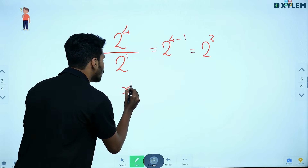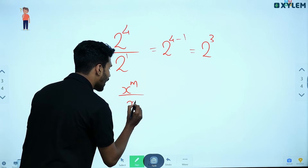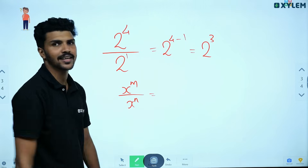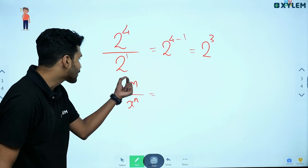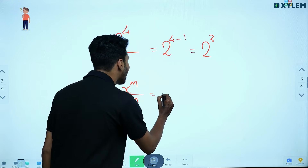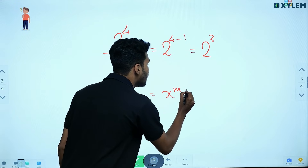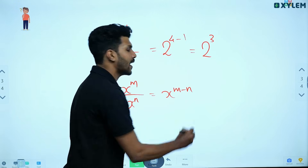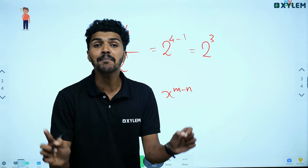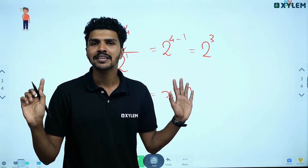In general, x raised to m divided by x raised to n equals x raised to m minus n. That is the rule for dividing powers with the same base. It's simple.